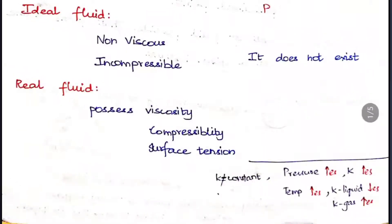We are going to continue with the properties of the fluid. There are two types of fluid in general: one is called ideal fluid and another one is called real fluid. Ideal fluid means it will be non-viscous and incompressible — this is not at all possible, so it is just an imaginary fluid only, it does not exist. Real fluid means it possesses viscosity, compressibility, and surface tension also.